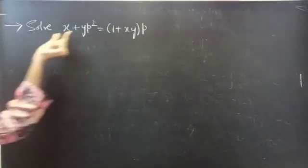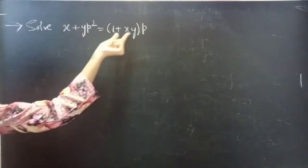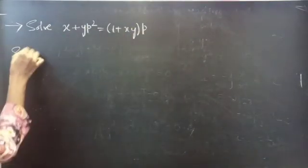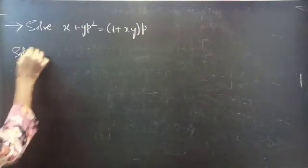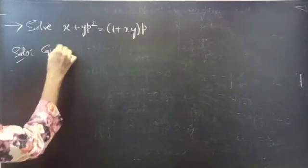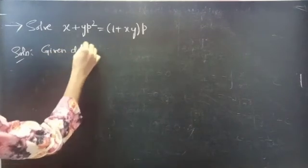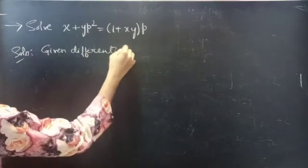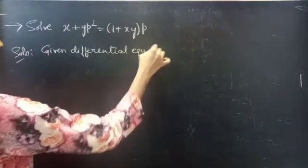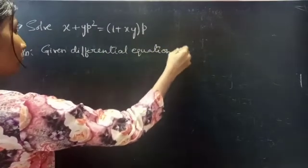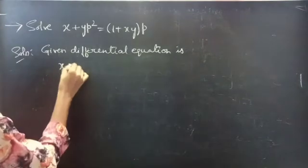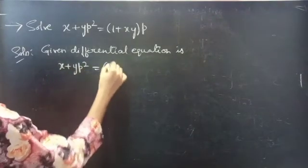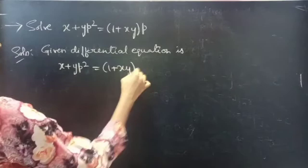Problem: solve x plus yp squared equals to 1 plus xy into p. The given differential equation is x plus yp squared equals to 1 plus xy of p.